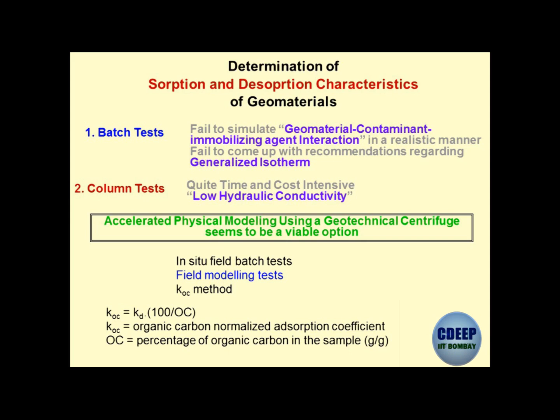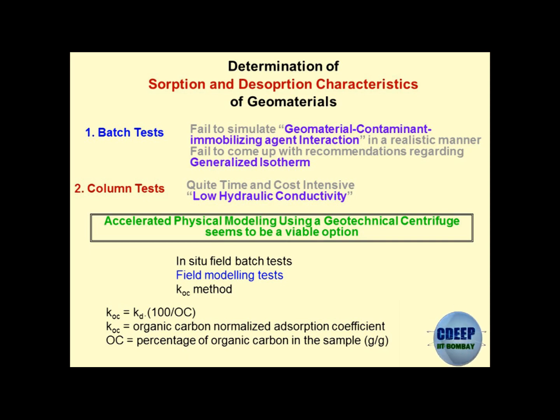The relationship between Cw and Cs is known as an isotherm. It has nothing to do with temperature, but the name is used — we call this Cs versus Cw relationship as isotherm. I will show you these graphs.